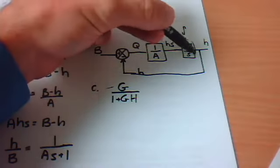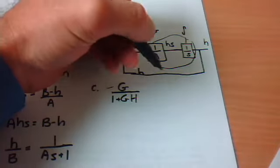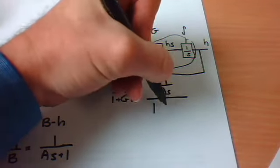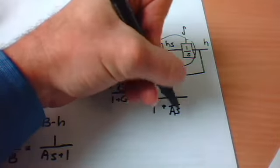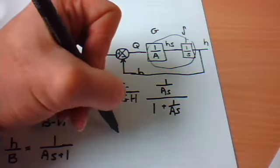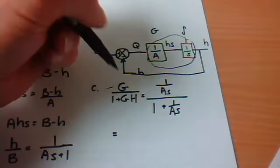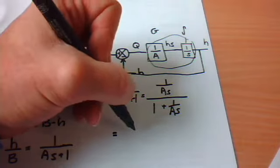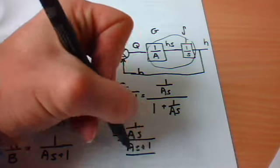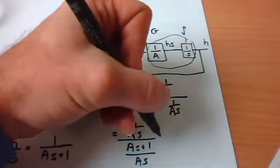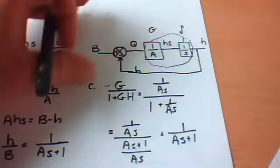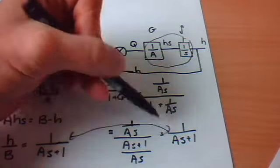Now G is this top part here. So G is going to be 1 over AS over 1 plus 1 over AS again, and H is just going to be 1, it's just a wire with a gain of 1. So then we can solve for that. And what we get is, solving through, we have 1 over AS over AS plus 1 over AS, invert and multiply, which is equal to 1 over AS plus 1. So you can see that the two do actually equal each other.